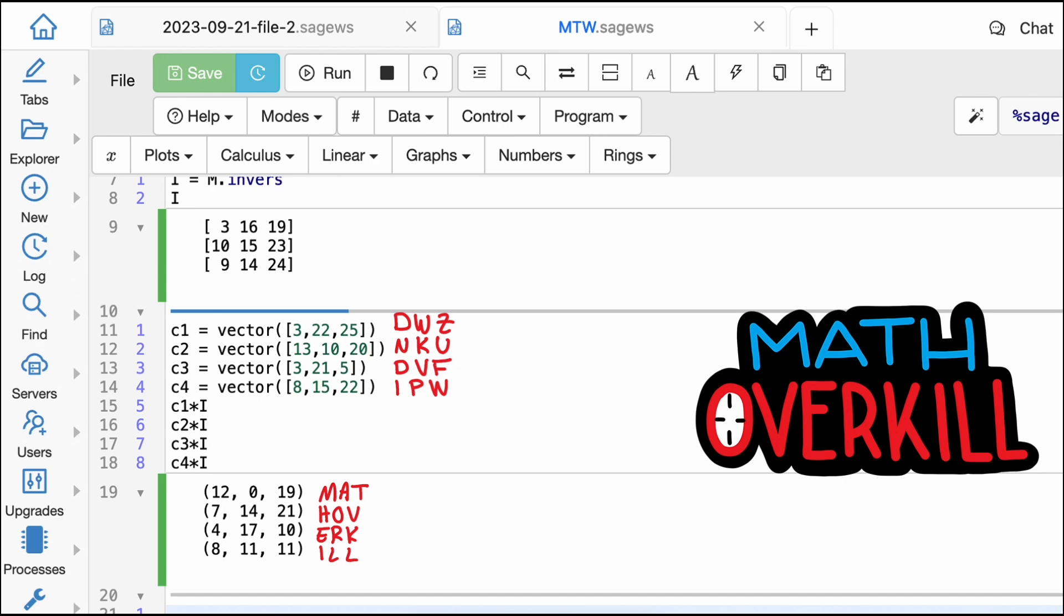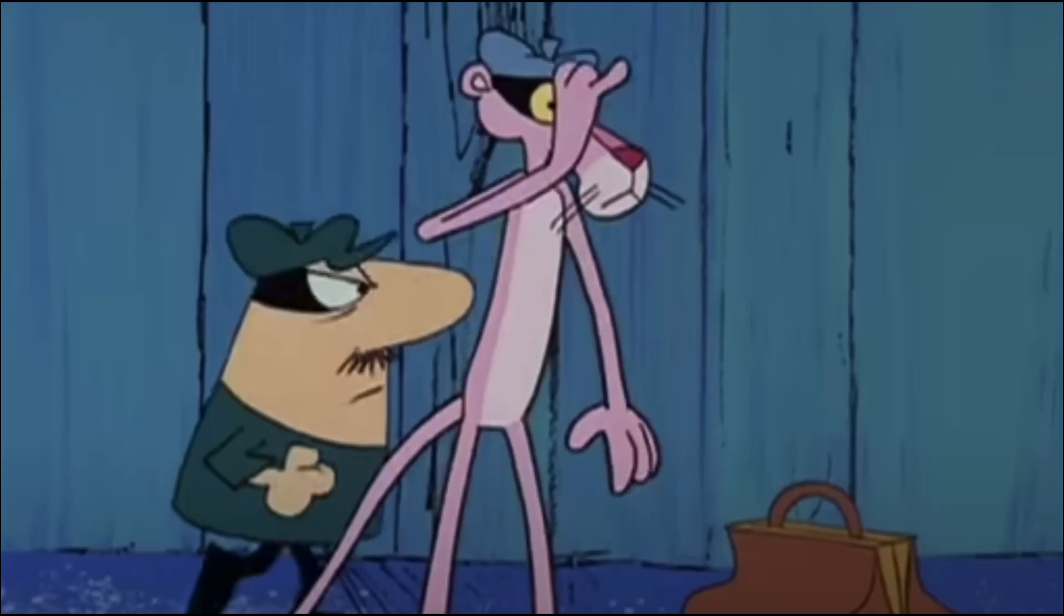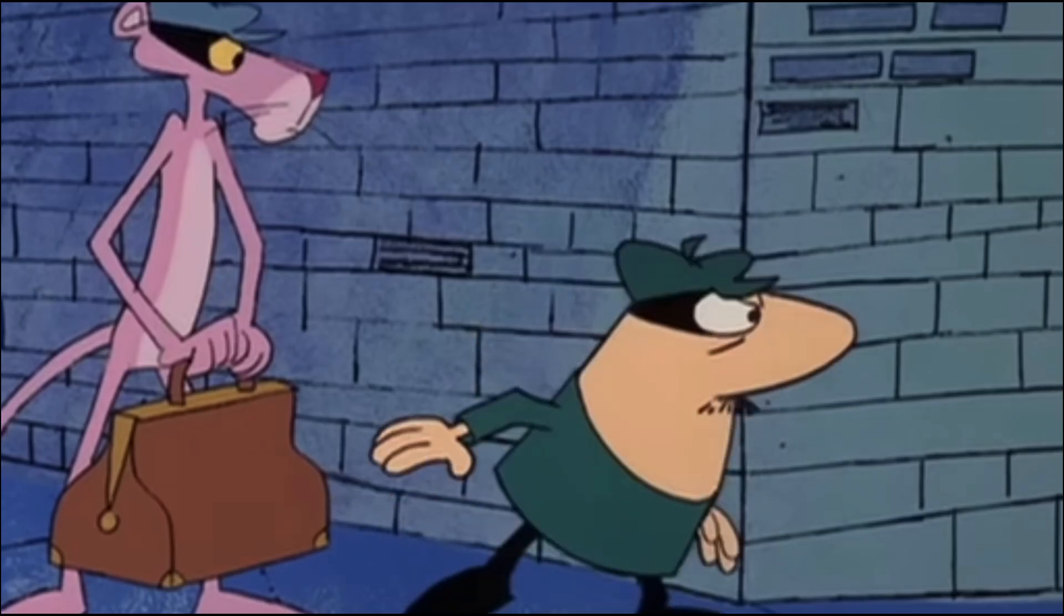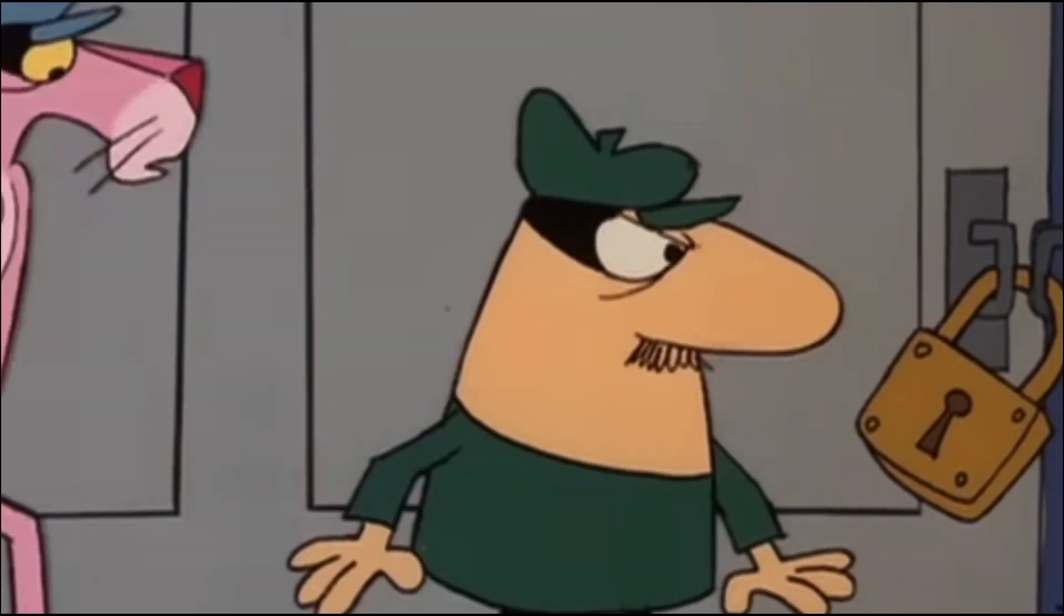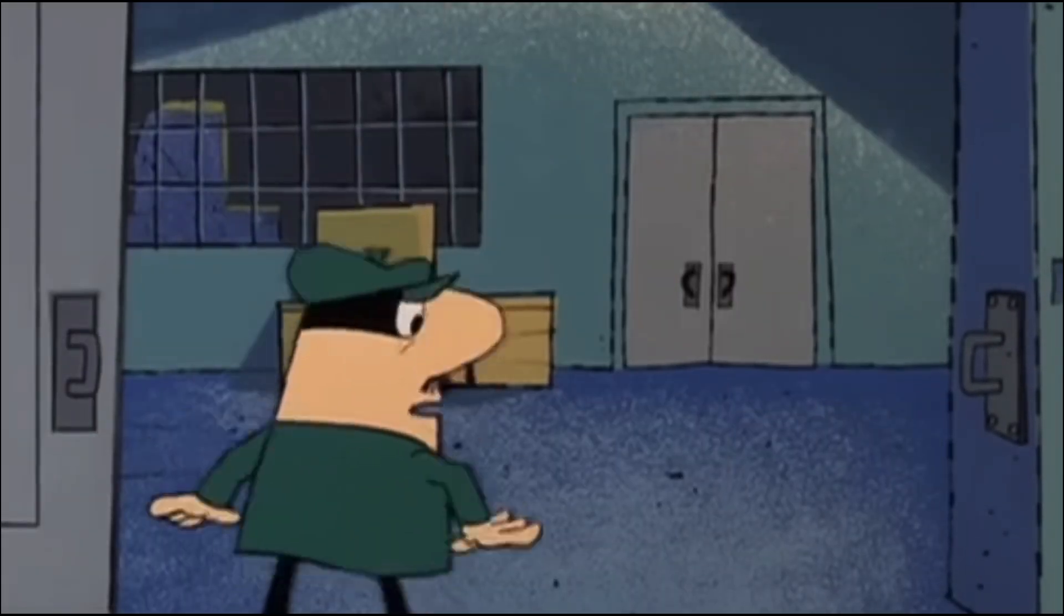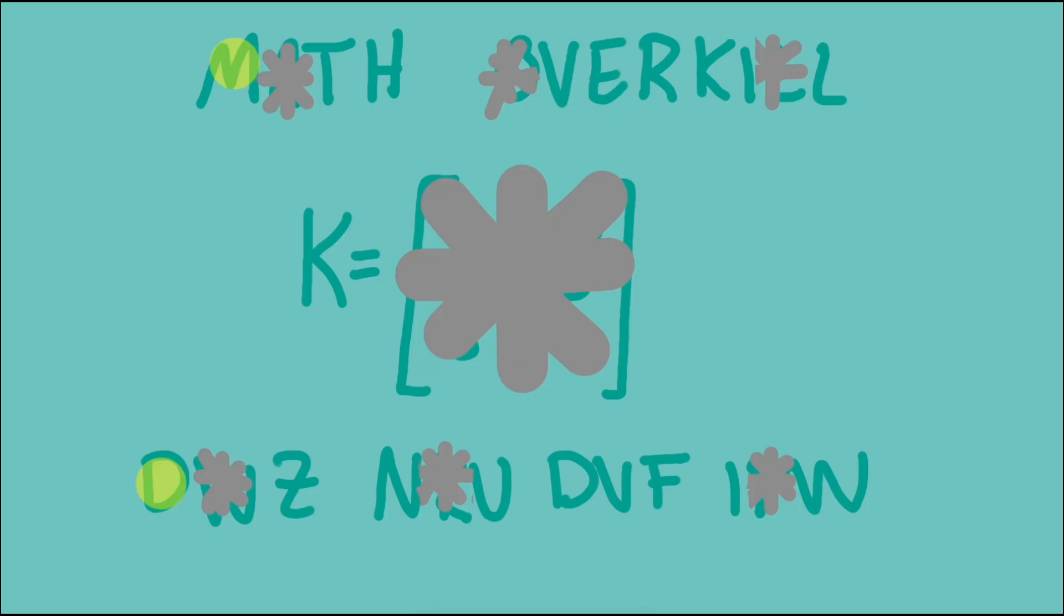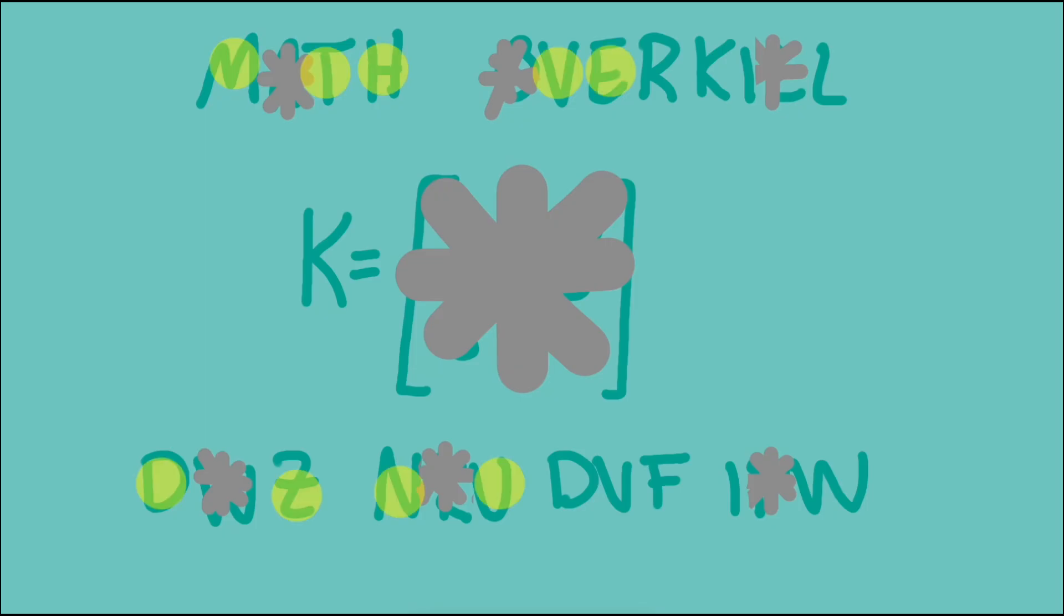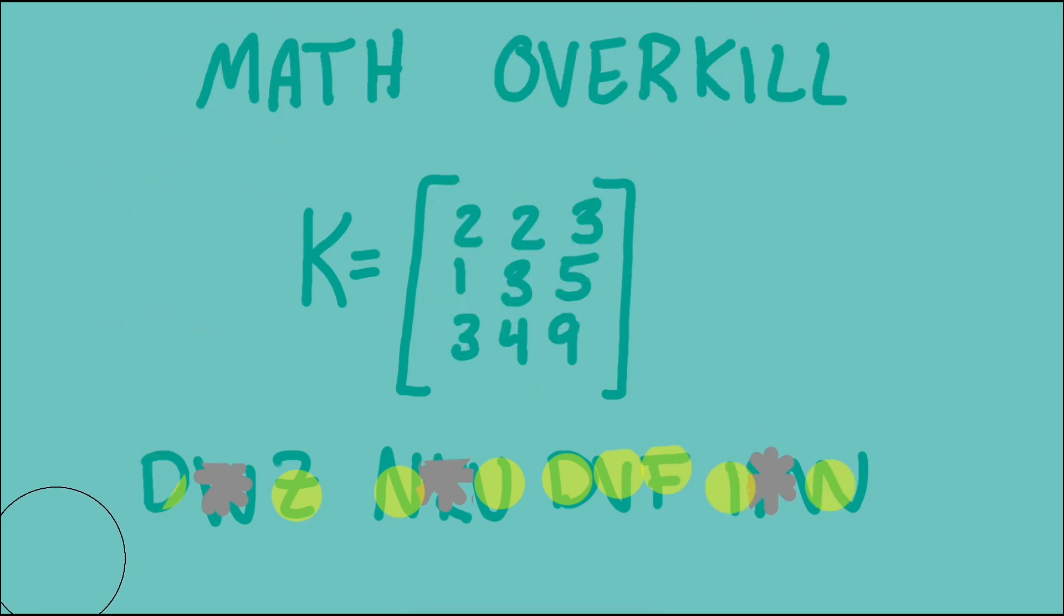But like every cipher this cipher has weaknesses. It's especially vulnerable to a known plain text attack. If someone who didn't have the secret key managed to get their hands on even just a few characters of plain text and the corresponding ciphertext, then they could use those pairs along with some matrix multiplication to work out what the secret key matrix was. For a 3x3 key a malicious person would only need 9 known characters to work out what the key had been and thus be able to decrypt any message encrypted with that key.